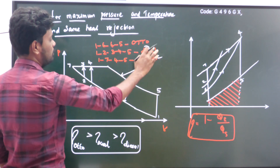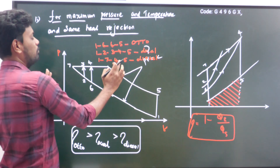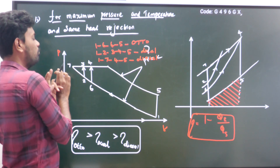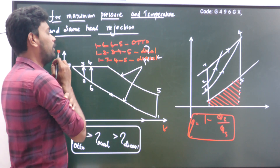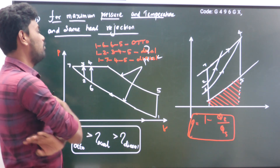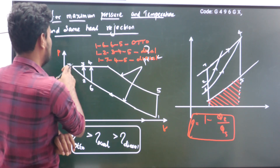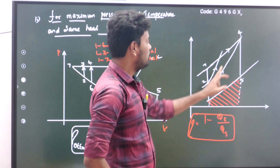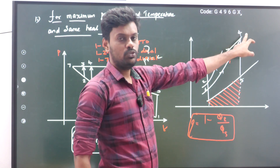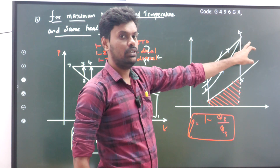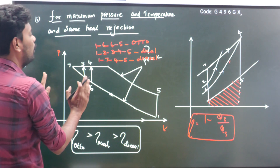For the Diesel cycle, P7 is the maximum pressure. For the Otto cycle, P4 is the maximum pressure. For the Dual cycle, P4 is also the maximum pressure. So for all cycles, the maximum pressure is common, and all are converging to that particular point, shown at 0.4 in the diagram.